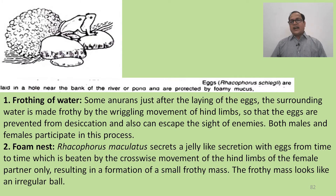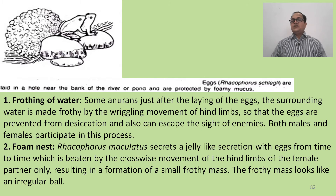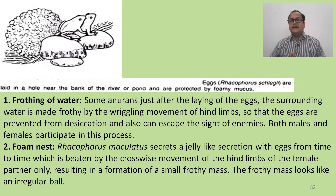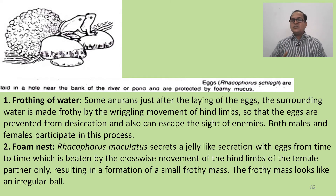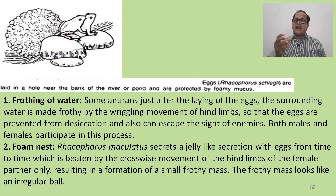Foam nest: Rhacophorus maculatus secretes a jelly-like secretion with eggs from time to time, which is beaten up by the cross-wise movement of the hind limbs of the female partner, resulting in the formation of a small frothy mass that looks like a regular wall.